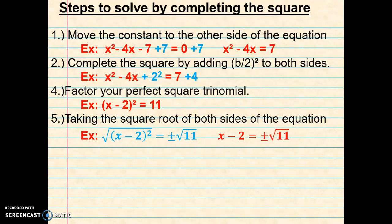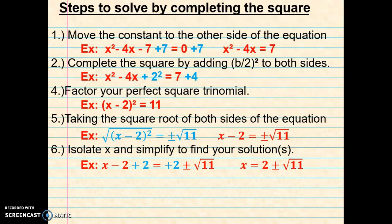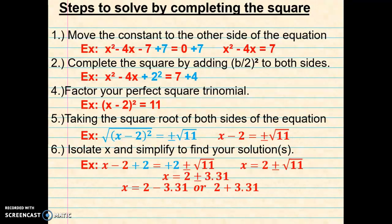Next we're going to take the square root of both sides, which gave me x minus 2 equals plus or minus the square root of 11. Next we're going to isolate x by adding 2 to both sides, which left me with x equals 2 plus or minus the square root of 11. I then took the square root of 11 and found it was 3.31, then simplified to get 2 minus 3.31 or 2 plus 3.31, giving two solutions: negative 1.31 or 5.31.